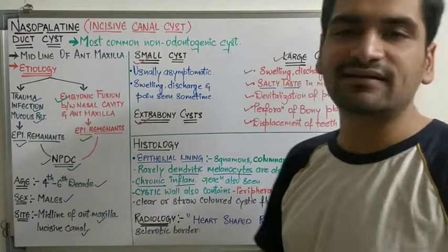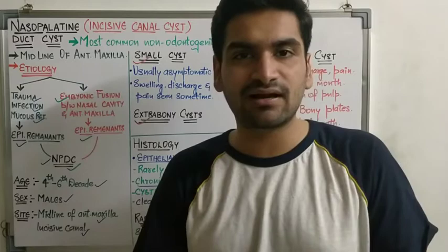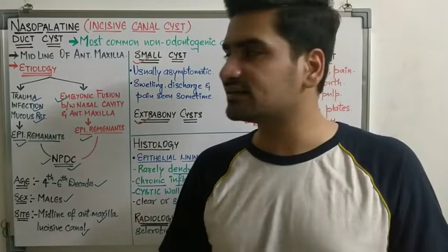The treatment of nasopalatine duct cyst is surgical enucleation. You remove all of the epithelial lining — no remnants should remain, because if even one remnant is left, there are chances of recurrence. So complete surgical enucleation of the cyst is required.